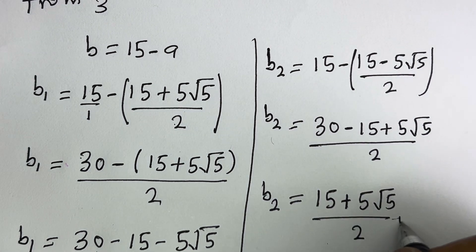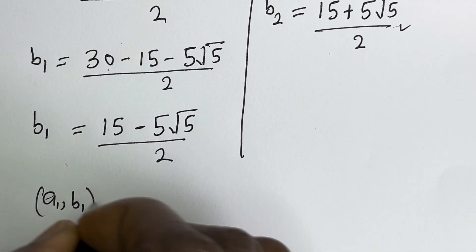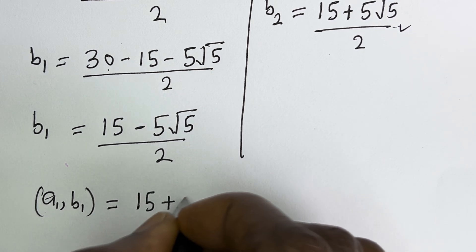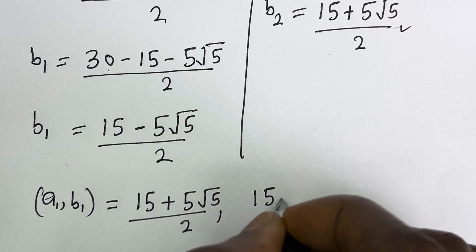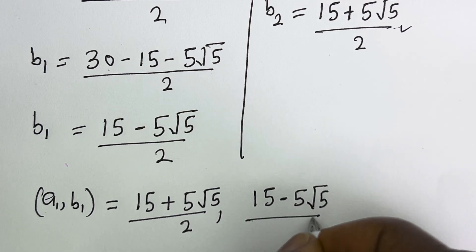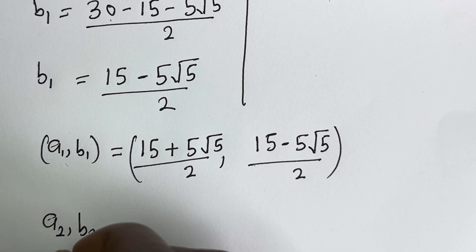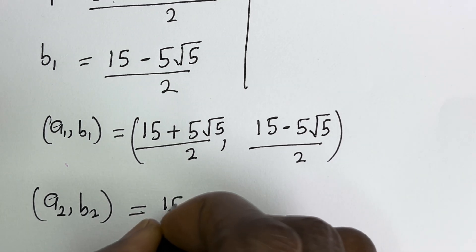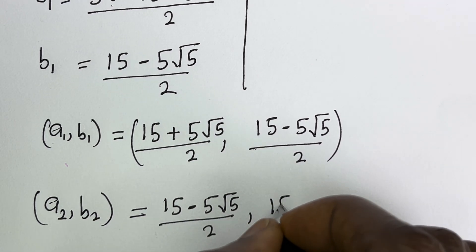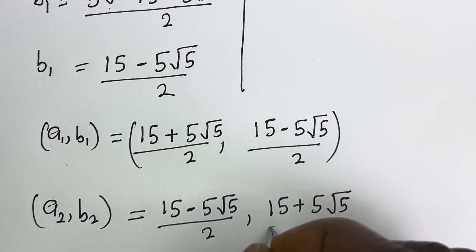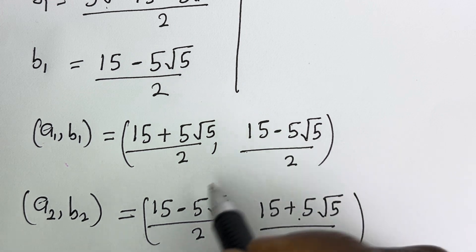Therefore our final answers are: (a1, b1) equals ((15 plus 5 root 5)/2, (15 minus 5 root 5)/2), and (a2, b2) equals ((15 minus 5 root 5)/2, (15 plus 5 root 5)/2). Notice that the value of a1 equals the value of b2, and the value of b1 equals the value of a2.